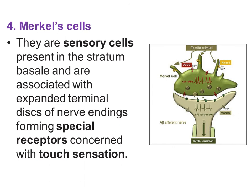The fourth type of epidermal cell is the Merkel cell. These are sensory cells present in the stratum basale, associated with expanded terminal discs of nerve endings, forming special receptors concerned with touch sensation.